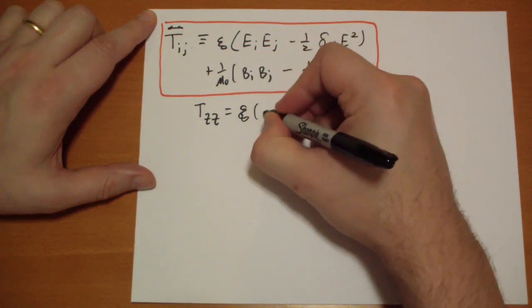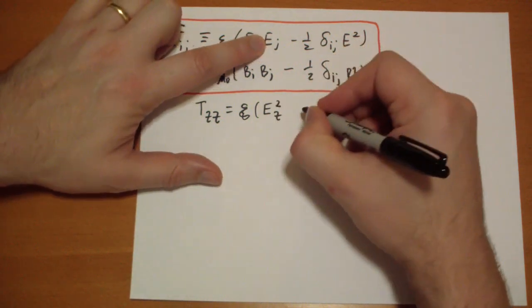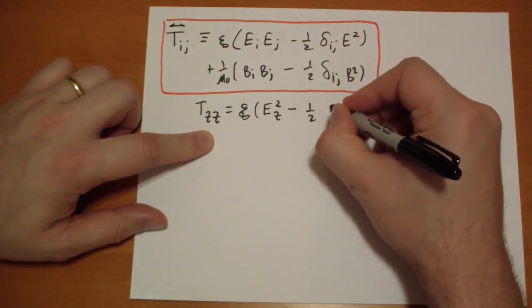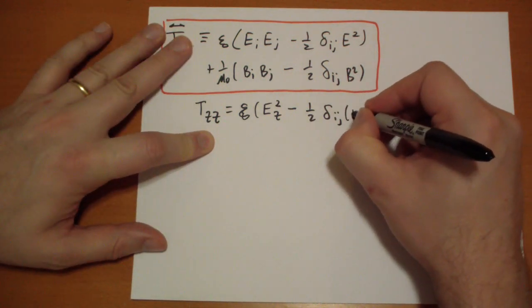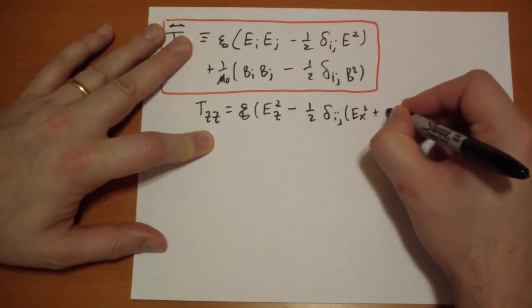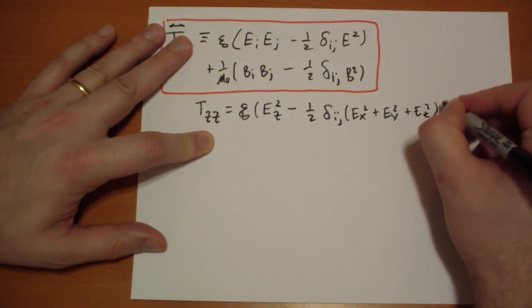This is a funky epsilon-knot. E Z times E Z, E Z squared minus 1 half Kronecker delta I J of E squared, which is just E X squared plus E Y squared plus E Z squared.